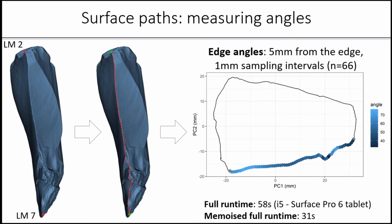You can go from this to this with three lines of code. Basically what this does, I was interested in finding out the angles measured at five millimeters inward from the edge at one millimeter sampling intervals for a total of 66 angle measurements. This is a very high resolution mesh and going from this to this on my Surface Pro tablet takes about 58 seconds. But these parts of this function are cached, so it actually runs faster on subsequent queries.